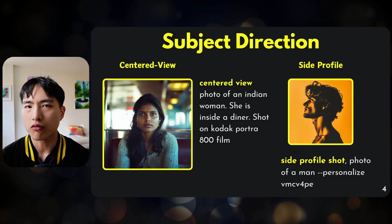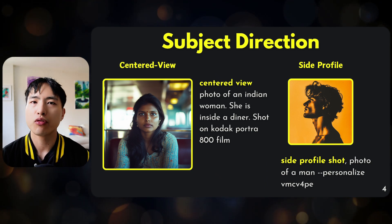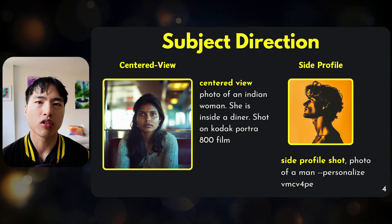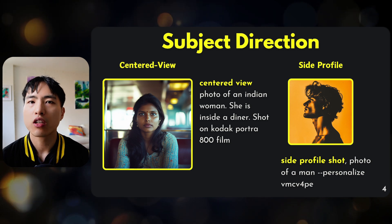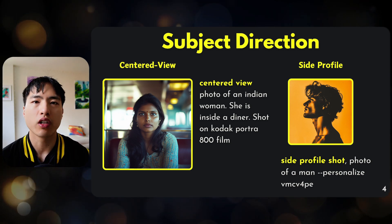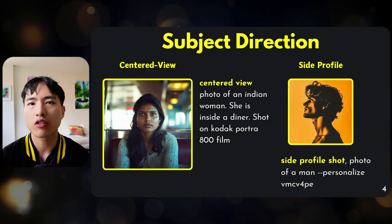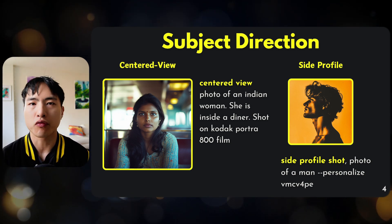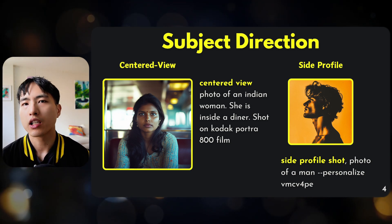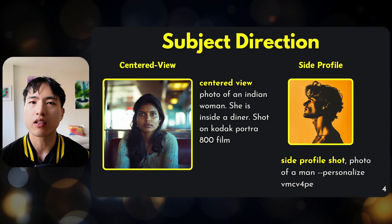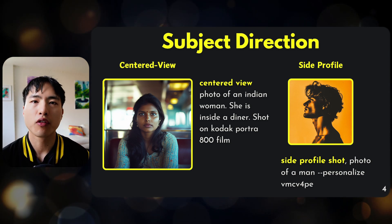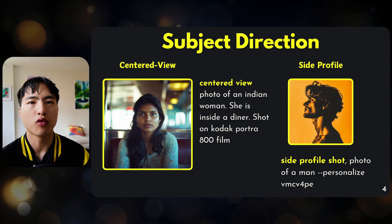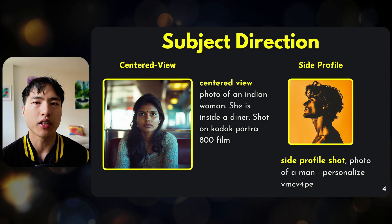Subject direction — think of it like if you were taking a photo of someone and you walked around them in a circle taking different photos. What direction would they be facing? If they're facing straight on right at you, that's the most basic centered view or the front shot. If you go 90 degrees to the side, that's a side profile. The side profile highlights a silhouette of their face much more — you can see the structure of the nose, the lips, and the chin.